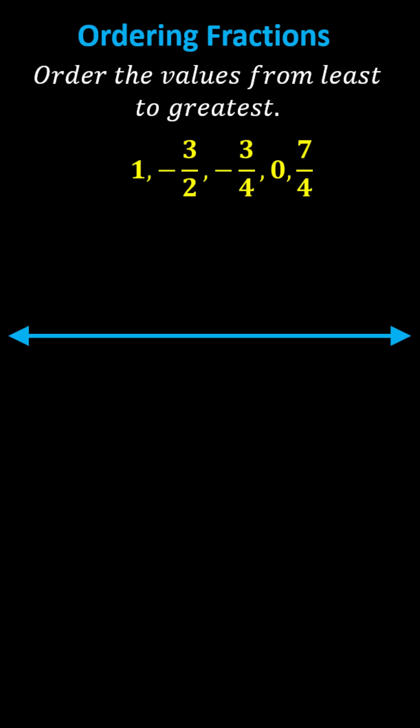Beginning with negative 3 halves, if we ignore the negative for a moment, to convert 3 halves to a mixed number, we divide 3 by 2. There's 1, 2, and 3.